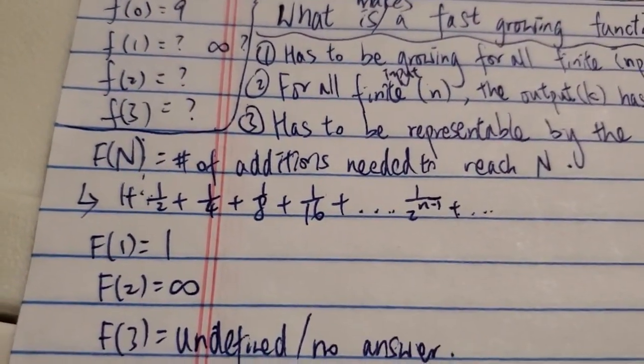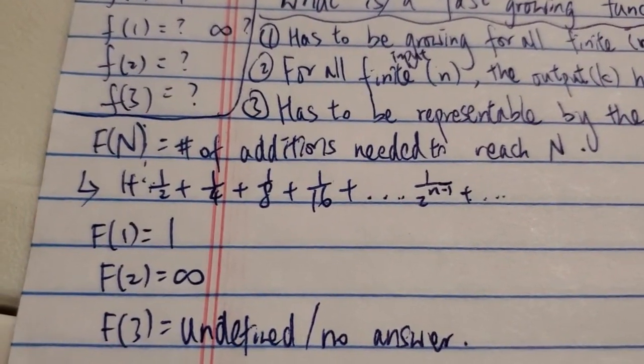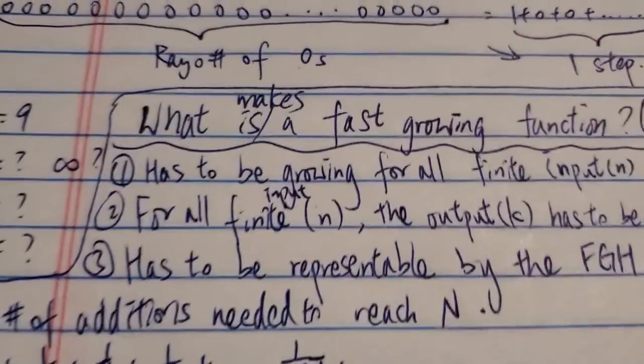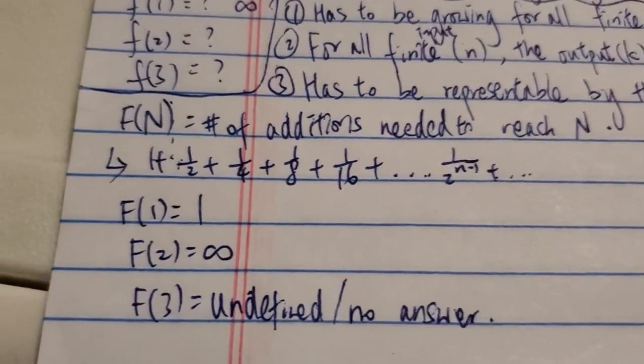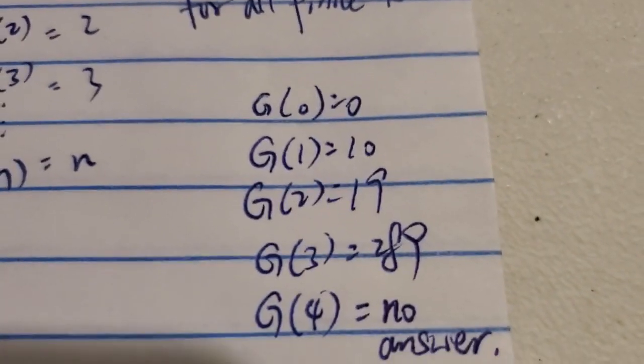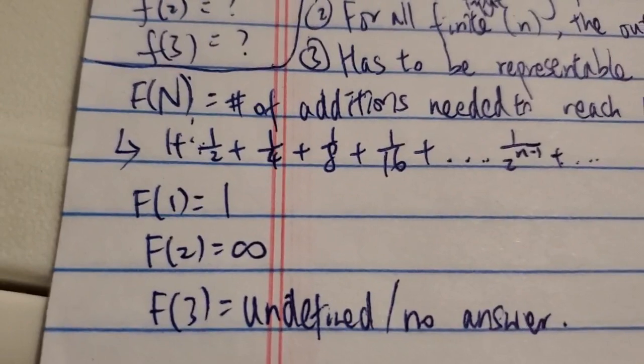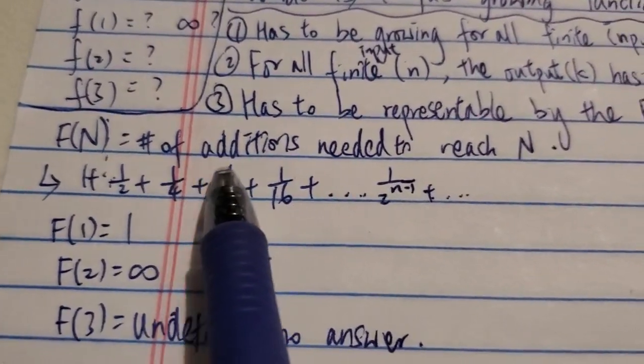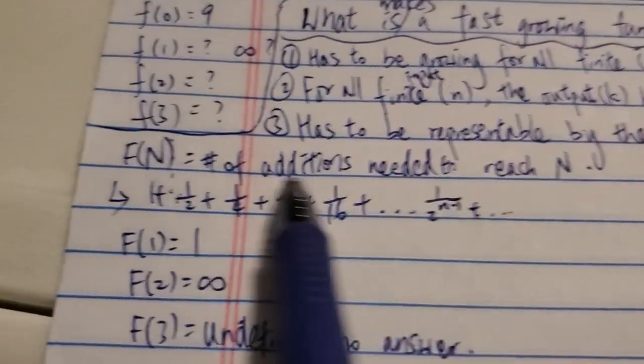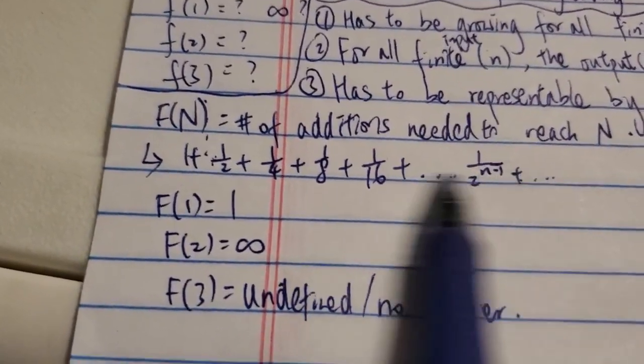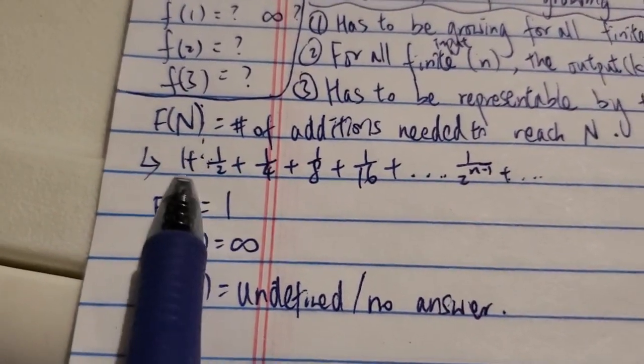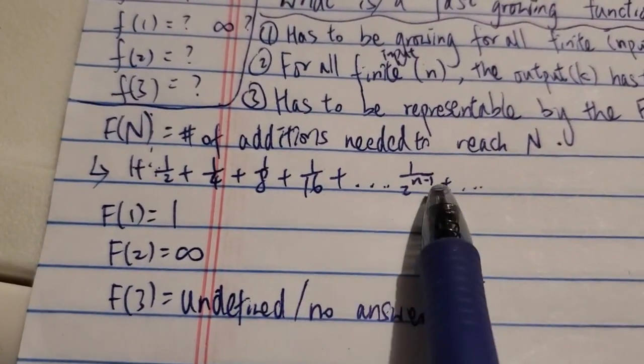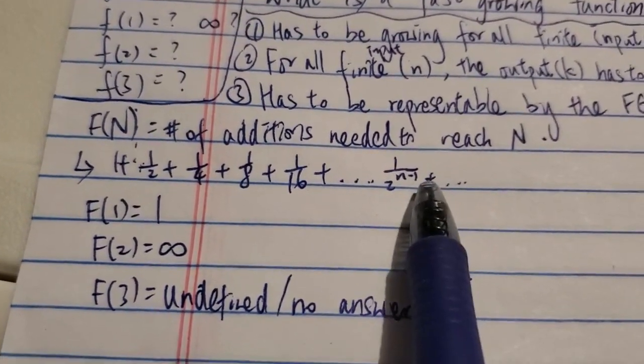And then one last thing is that there's a commenter, he actually suggested another function, which is not actually a function by these three points, which has a similar growth rate as this one that I suggest in my last videos. So he suggests that this function F(n), what does it mean, is that it's basically the number of additions needed to reach n itself. And it has to follow this pattern over here, or this formula. So F(n) is basically 1 + 1/2 + 1/4 + 1/8 + 1/16, et cetera. So basically 1 over 2 to the power of n minus 1. This is the pattern forever.